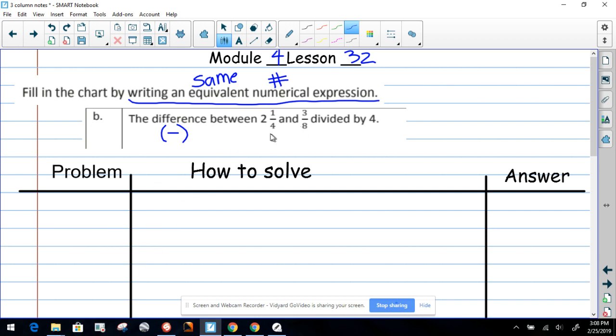Oh, I see. So these two numbers are going to be subtracted from each other, then we're going to divide that by four. So let me write that down. That's going to be the difference: two and one-fourth.